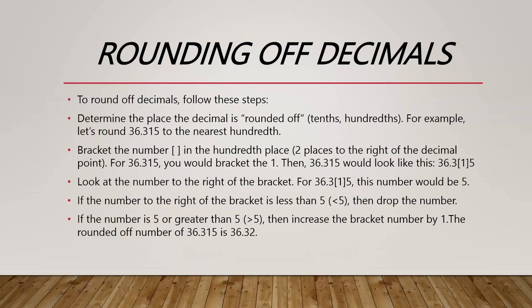Next, look at the number to the right of the bracket. For 36.3[1]5, this number is 5. There are two cases: if the number is less than 5, drop it and leave the bracket number as is. If the number is 5 or greater, increase the bracket number by 1.